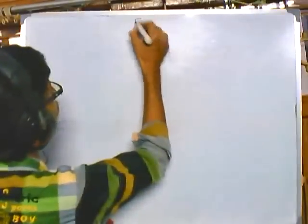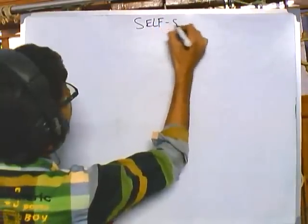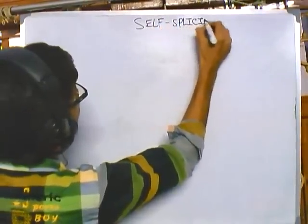Welcome back. In the previous video we discussed the basics of RNA splicing. Now in this video we will be discussing one of the special mechanisms of RNA splicing called self-splicing or intron-mediated splicing. Remember we talked about two different types of splicing: intron-mediated and spliceosome-mediated. This video focuses on intron-mediated or self-splicing.